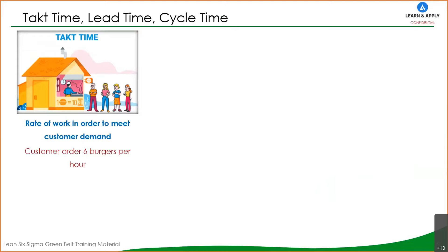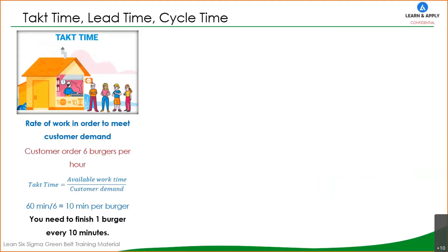Let's talk about the formula with an example. The customer orders six burgers per hour — that is a customer requirement of six burgers in one hour. The takt time formula is available work time divided by customer demand. The available work time is 60 minutes, and the number of burgers is six, so the takt time is 10 minutes per burger.